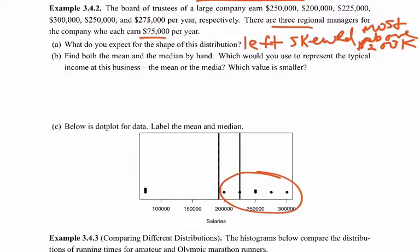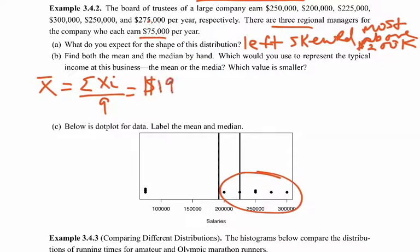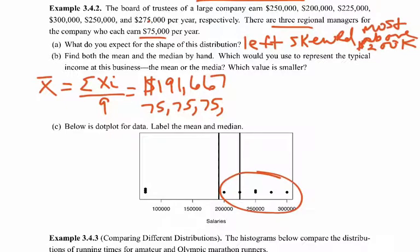Find both the mean and the median by hand. To calculate the mean, we add up the values and divide by the number in the set — the sum of x-sub-i divided by 9. The mean here is $191,667. To find the median, we list salaries from smallest to largest: $75,000, $75,000, $75,000 (the three regional managers), then $200,000, $225,000.